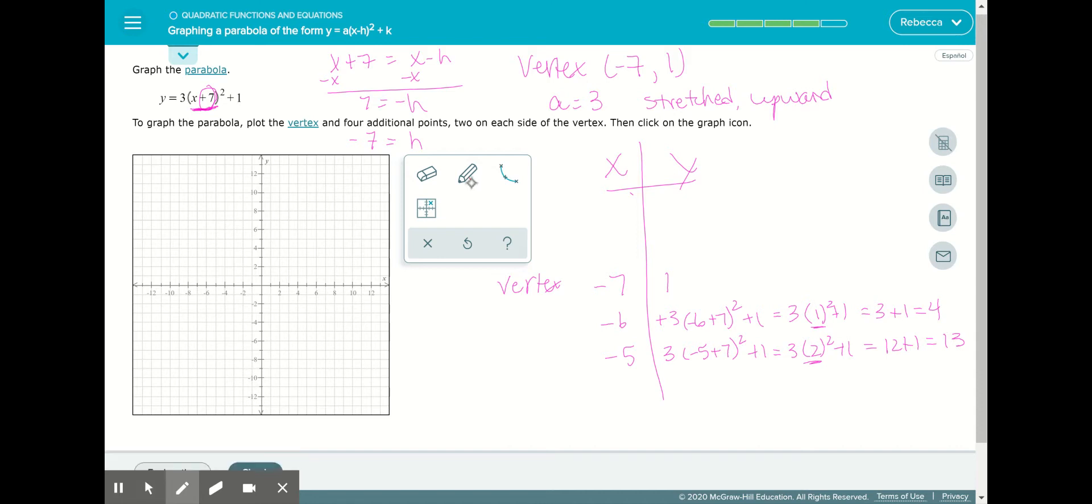We'll go ahead and graph. We need to plot negative 7 and 1. We've got negative 6, 4. And then we're asked to plot negative 5, 13.